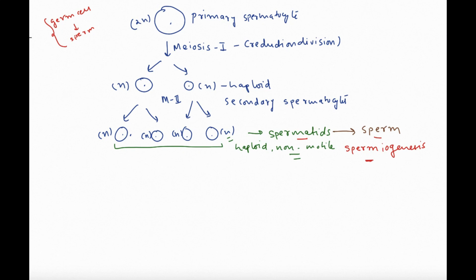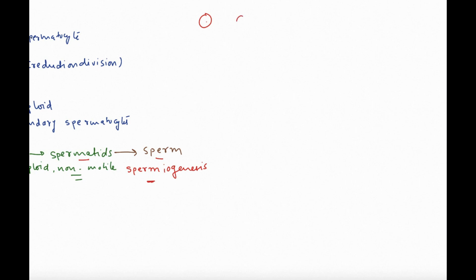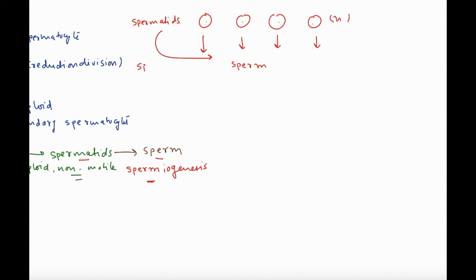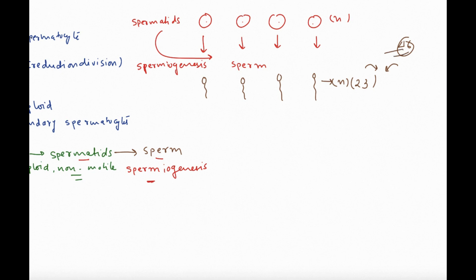Each sperm is haploid and has 23 chromosomes. We know that sperm contributes 23 chromosomes and ovum contributes 23 chromosomes, and that's how the fertilized egg gets 46 chromosomes. At the end of spermatogenesis you get sperm that are haploid with 23 chromosomes. Now let's look at the important changes that happen during spermiogenesis — from spermatids to sperm.